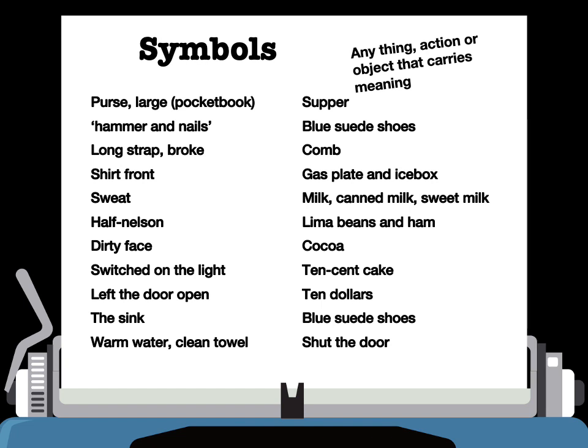She makes supper and asks him about the money. Blue suede shoes — at that time, expensive shoes — are what he wants. But really she's trying to get him to clean up and use the comb. The gas plate and the ice box are symbols of what she has: heat and cool milk. Milk is very symbolic — it's what mothers give their children, and that's what she's giving him.